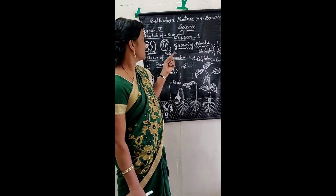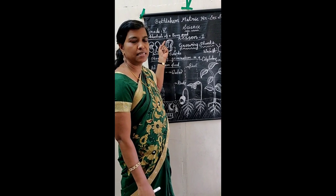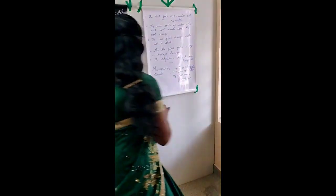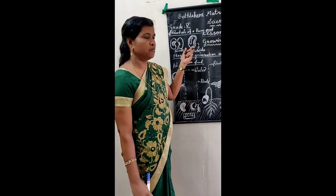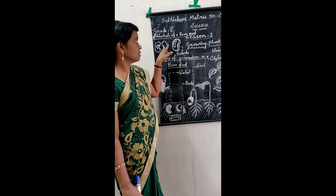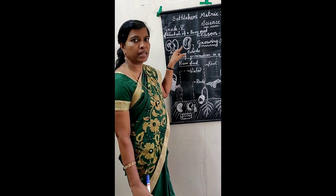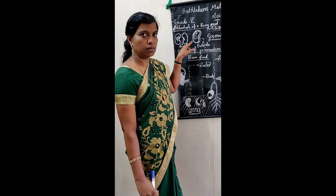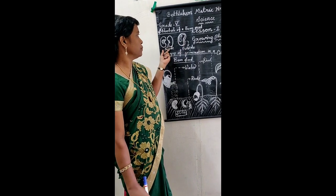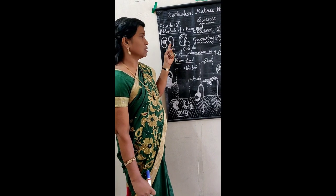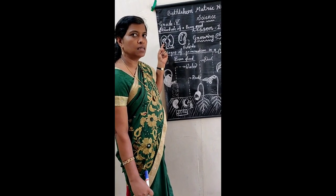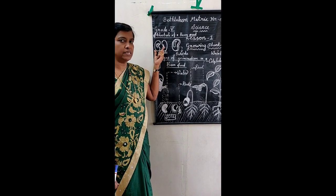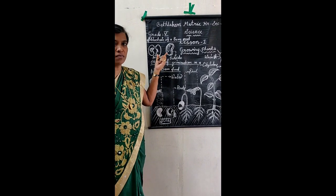Now let us learn about the structure of a bean seed. Have you seen a bean seed? This is a bean seed. We will study the outside portion and the inside portion. On the outside, the outer covering is called the seed coat — it protects the baby plant inside the seed. On the inside, there are two seed leaves, also called two cotyledons.